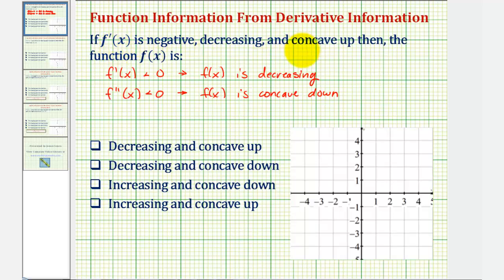We're also told f prime of x is concave up, which means the second derivative of the derivative, or the third derivative, would be positive. But this actually does not help us answer the question.